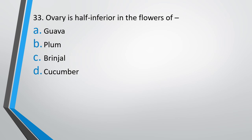Question number 33: The ovary is half inferior in the flowers of: guava, plum, brinjal, or cucumber? A half inferior ovary is seen in the flowers of plum — the correct answer is option B.